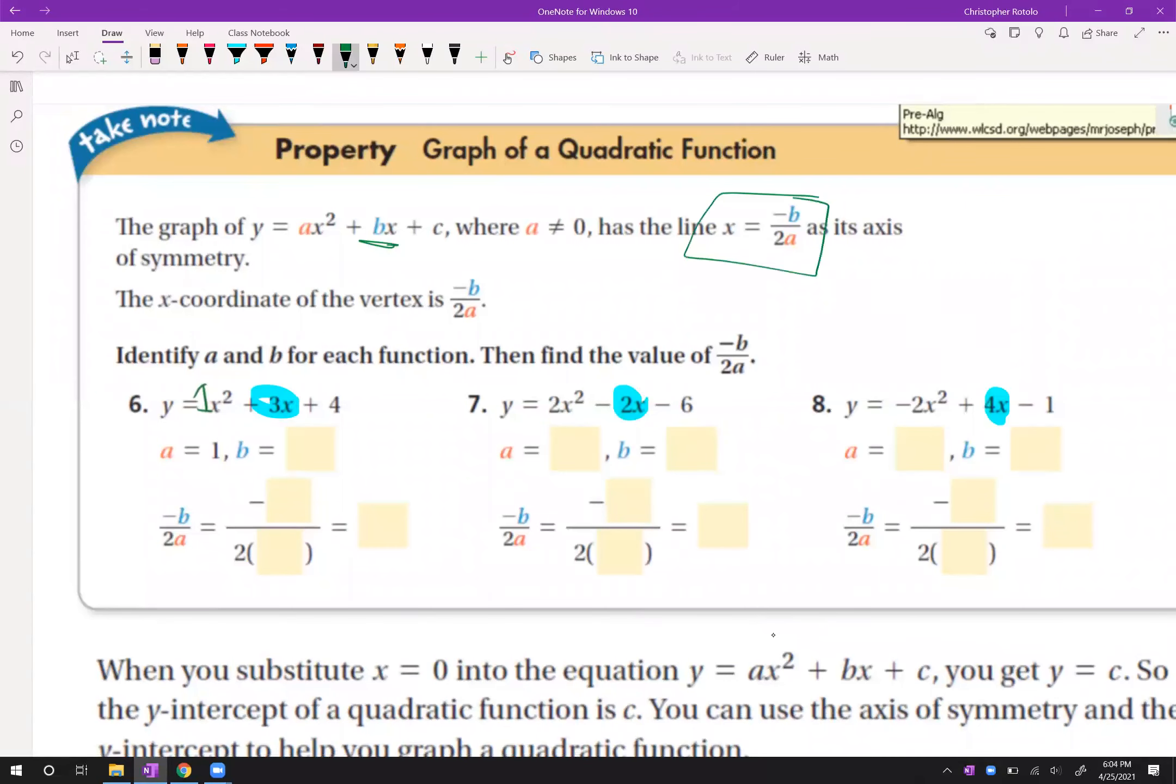And you already know this formula, right? The X value, this is going to be our axis of symmetry. So our axis of symmetry then is going to be X equals this number. How do I find that number? Well, you take the beginning of the quadratic formula.